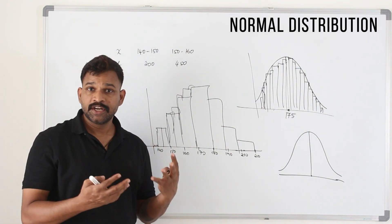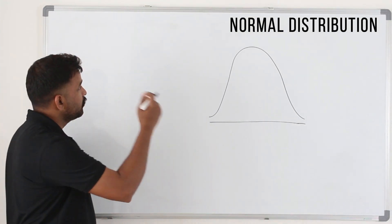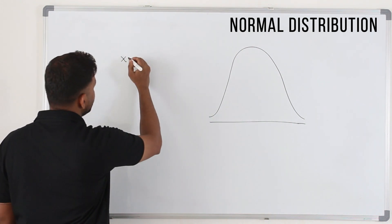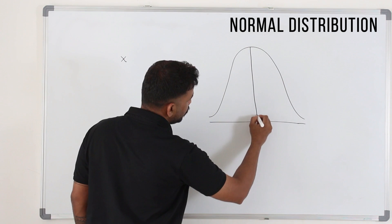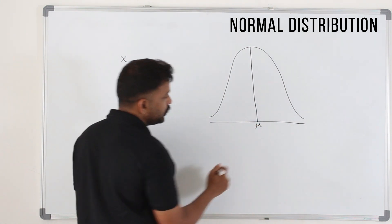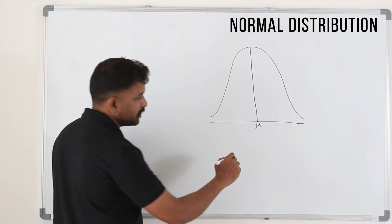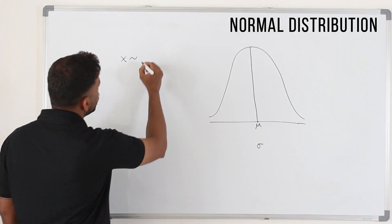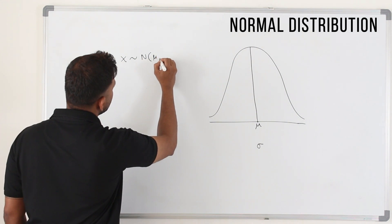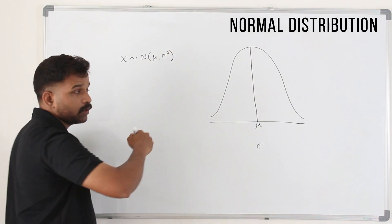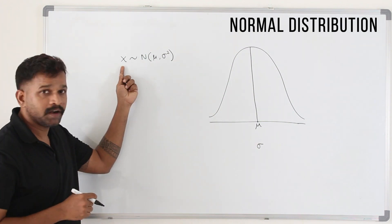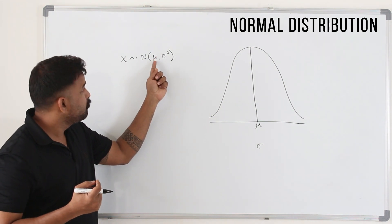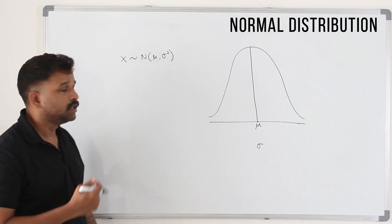You need to know certain notations and parameters. When a random variable follows normal distribution, this is how we write it. Let's say the mean is in the middle, we use μ to denote the mean. And let's say σ is the standard deviation. We write it as X ~ N(μ, σ²). This means the continuous random variable X follows a normal distribution with mean μ and standard deviation σ.